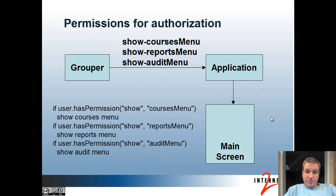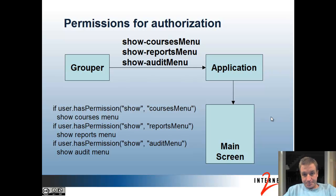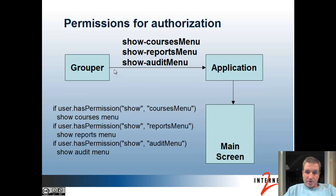If you're using permissions for authorization, you define all the permission resources in Grouper — such as the courses menu, reports menu, and audit menu — and you have some actions on those resources, in this case 'show' or just 'assign'. Those permissions will go to your application, and then instead of checking if you're in a group, it'll check if you have a certain permission to show something, and then show it.